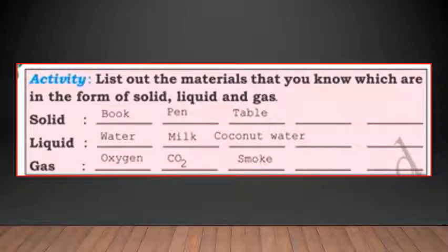Next there is one more activity: list out the materials that you know which are in the form of solid, liquid, and gas. For solids you can write book, pen, table. Liquids: water, milk, coconut water. Gas: oxygen, CO2 (carbon dioxide), smoke. Think and group these materials in the particular column.